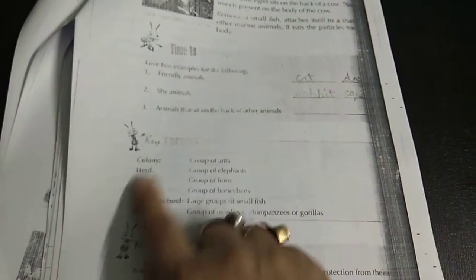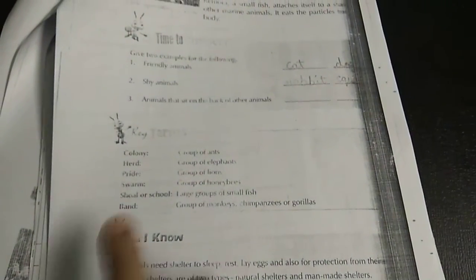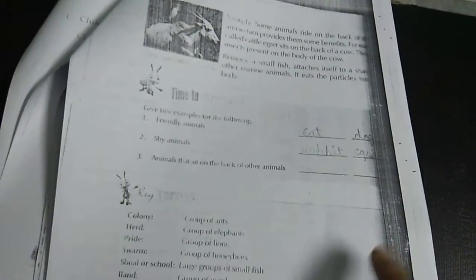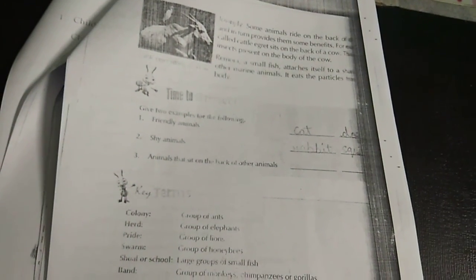Colony, herd, pride. These are all group names. This you should know. And I will give you homework. So, for today, this much. We have finished the chapter. Thank you.